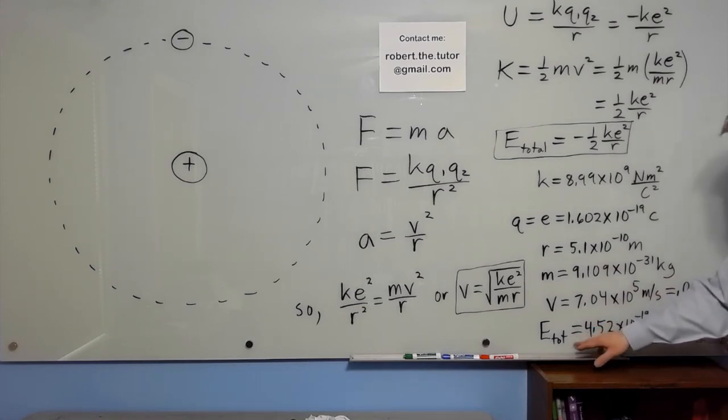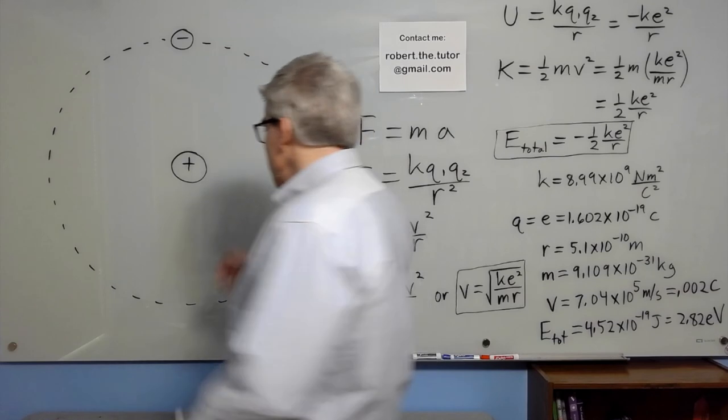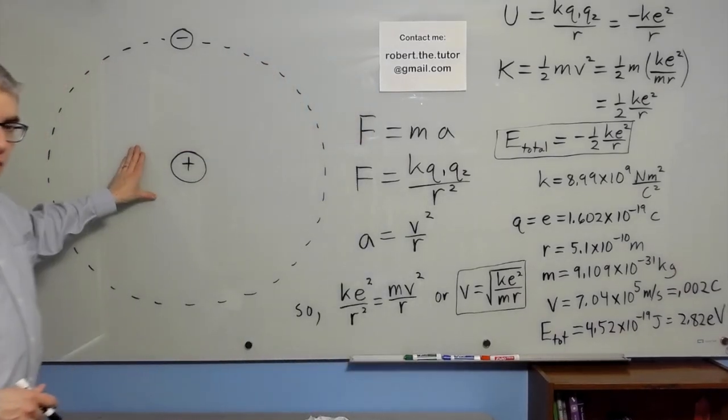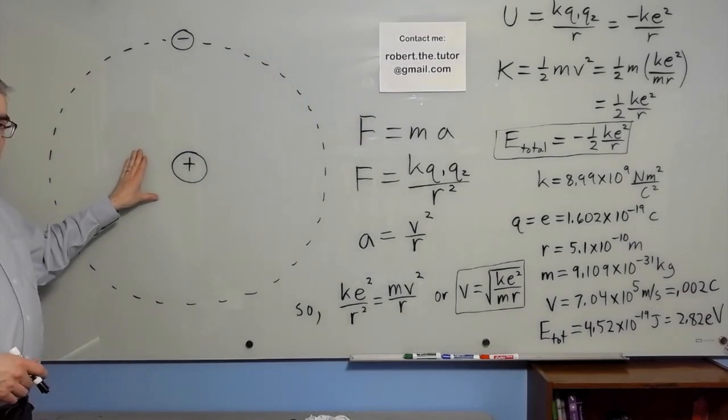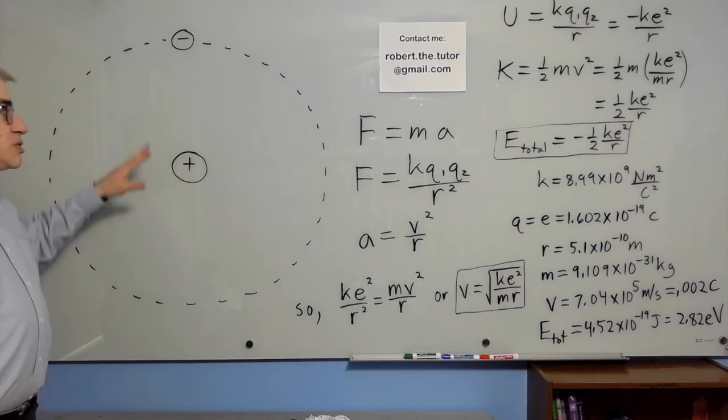And for the total energy, we get 4.52 times 10 to the negative 19 joules, which is also 2.82 electron volts. So this is the Bohr model of the atom. It's a very simplified picture of the atom that Bohr made in about 1912 as they were stumbling towards quantum mechanics. So it has historical importance.